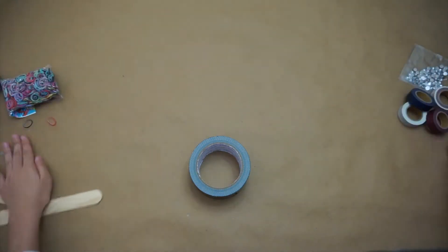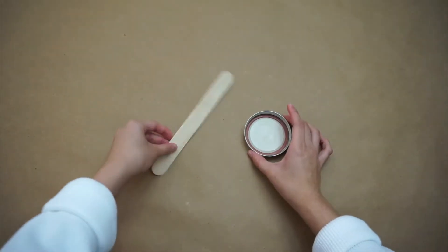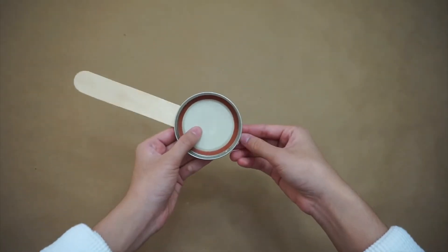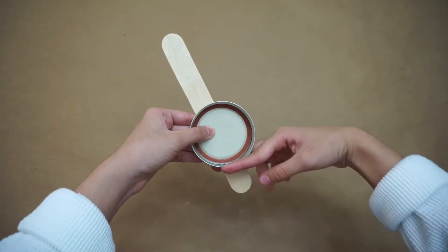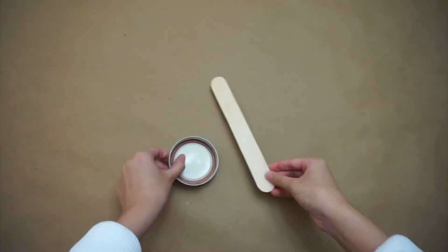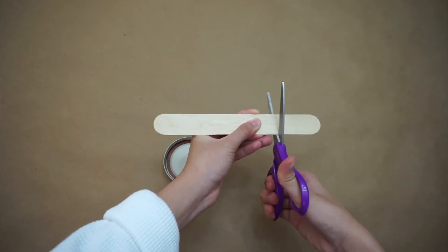Let's set aside all of our supplies and begin with the lid and popsicle stick. We're going to measure the popsicle stick according to the lid and cut out a small portion of the stick because we don't want a really long fretboard.